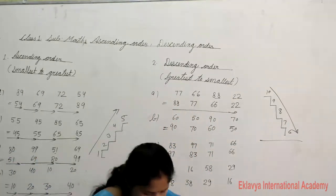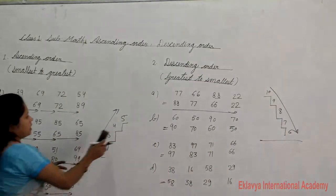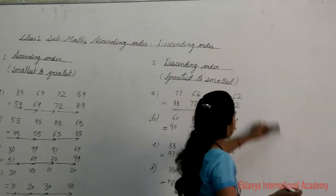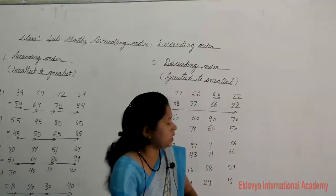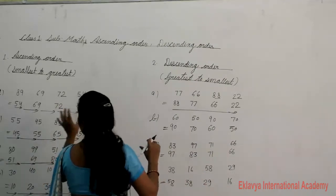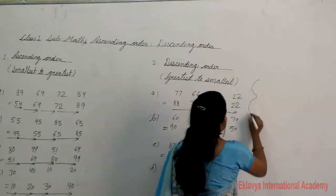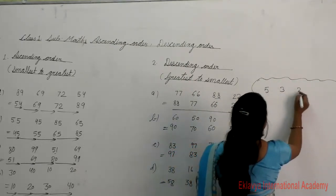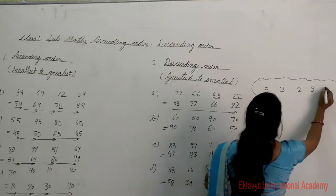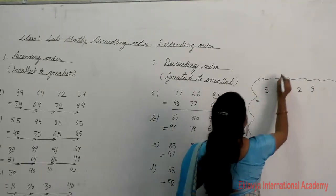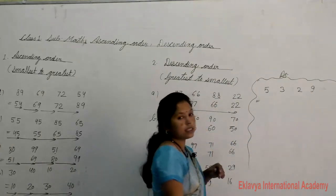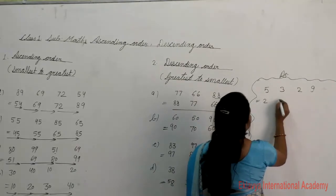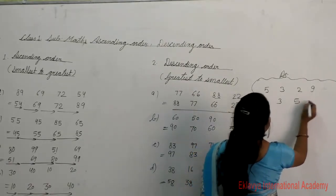So students, I hope you understand. Now let's practice: given numbers 5, 3, 2, 9 — write the ascending order. In ascending order we choose the smallest number first. The smallest number is 2, then 3, then 5, then 9.